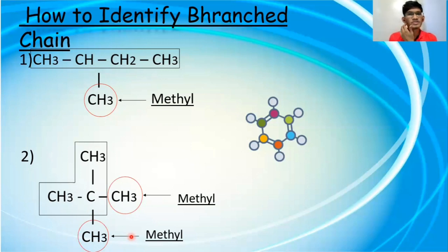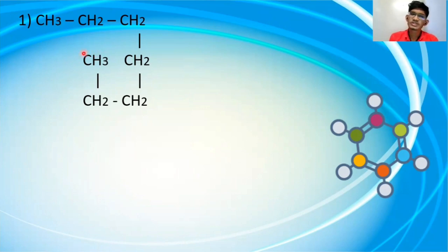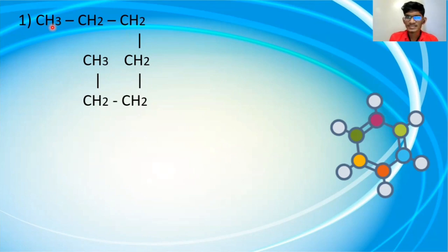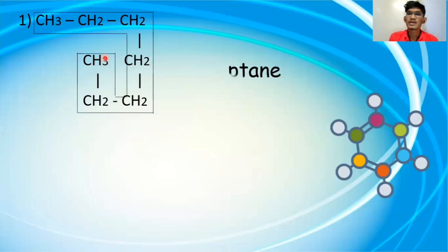Now let us solve the questions related to the naming table. First, let us see the terminal points. One and two — since there are only two terminal points, it is a straight chain. Now count all the carbons: 1, 2, 3, 4, 5, 6, and 7. Seven carbons means heptane. Now assign the prefix — for a straight chain the prefix is the small letter n. So the answer is n-heptane.